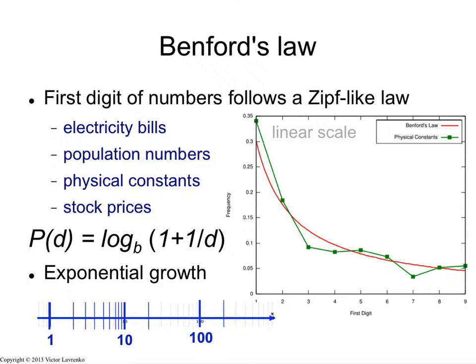One will be the most frequent value for the first digit of a number, and two will be less frequent, and three will be less frequent, and four will be less frequent, and so on. The figure on the right shows the plot of frequencies of physical constants on a linear scale, not log scale, and the frequencies do actually decrease. This is fit by Benford's law: the probability of a digit is proportional to the log of one plus one over the value of the digit.